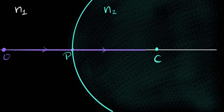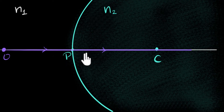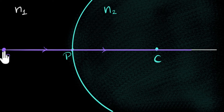One ray of light — we'll send it along the principal axis, and this ray will go undeviated because it's perpendicular to the surface, so the angle of incidence is zero and there will be no refraction. Any ray which passes through the center of curvature is going to be normal to the surface. This ray passes through the center of curvature, so it's normal — it goes undeviated.